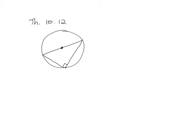A lot of words to basically say: if you have a right triangle, the hypotenuse is a diameter; if a side of an inscribed triangle is a diameter, you have a right triangle — you go back and forth. The reason: a diameter creates a semicircle of 180°, and the inscribed angle is half of that — 180 ÷ 2 = 90 degrees.